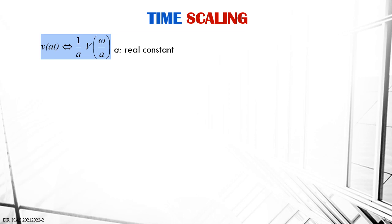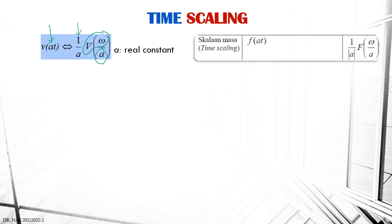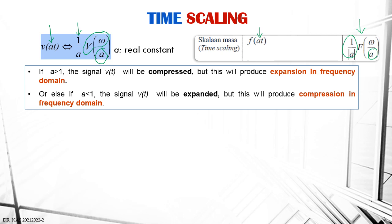If you still remember, if there are changes inside the bracket, it is a time-based operation. In this case, the signal is being scaled by 'a' in the time domain. What happens in the frequency domain is that the signal V(omega) is modified in both amplitude and frequency. If you refer to the Fourier transform table, if a signal is scaled by 'a' in the time domain, the frequency domain signal is modified in amplitude and frequency. As a recap: if 'a' is larger than 1, the signal will be compressed in t but expanded in frequency.